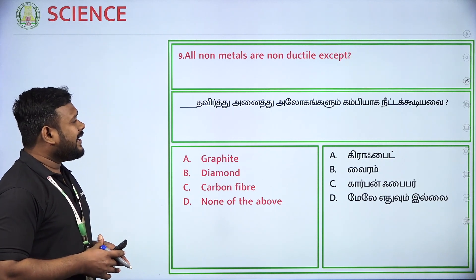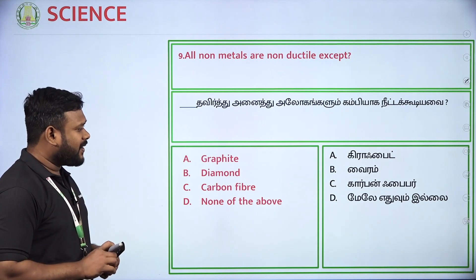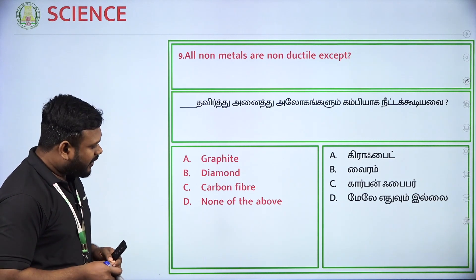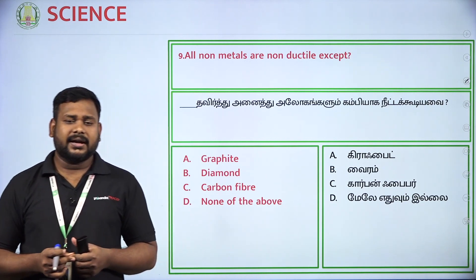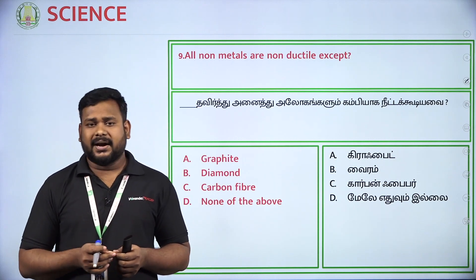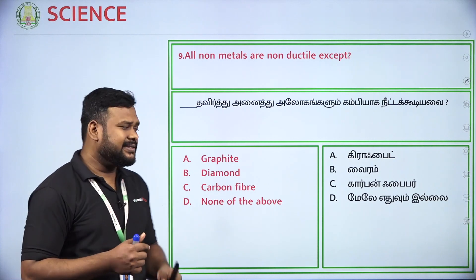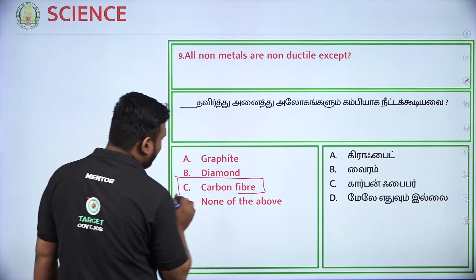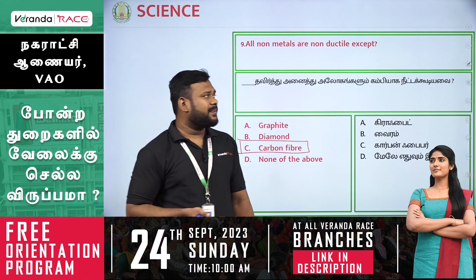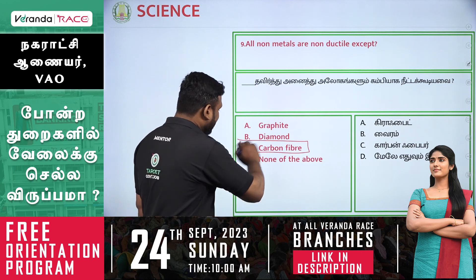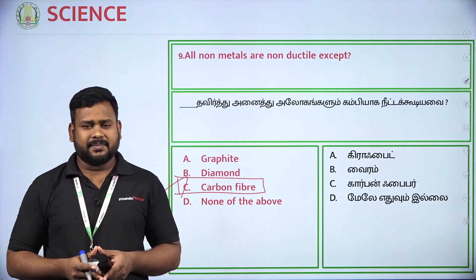All non-metals are non-ductile except which of the following? Options include graphite, diamond, carbon fiber. The exception among non-metals that is ductile is carbon fiber. So that is the answer.